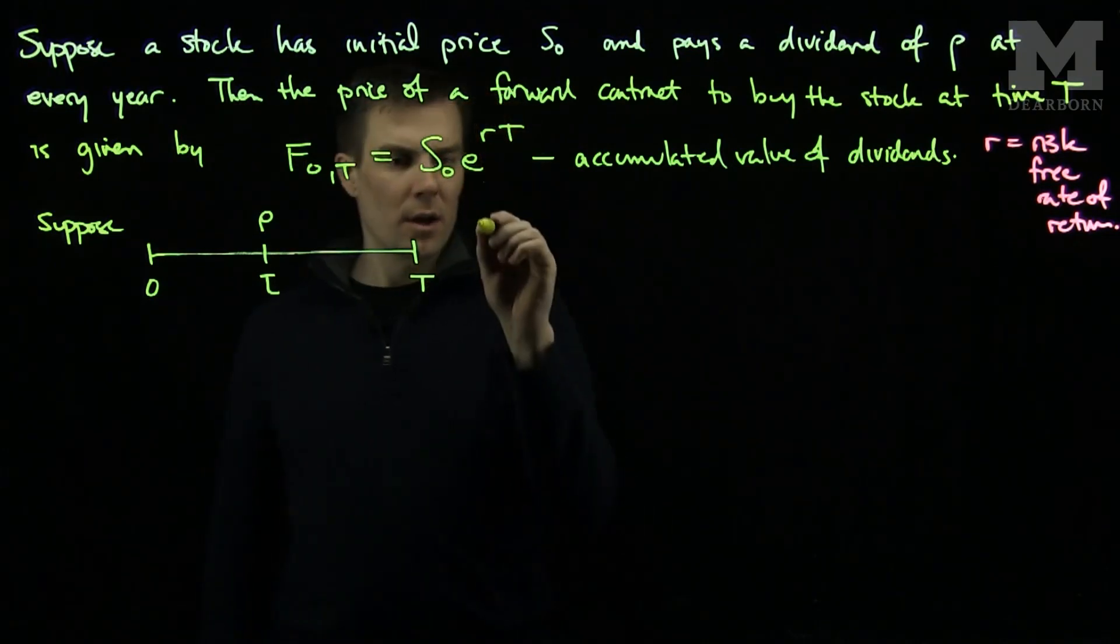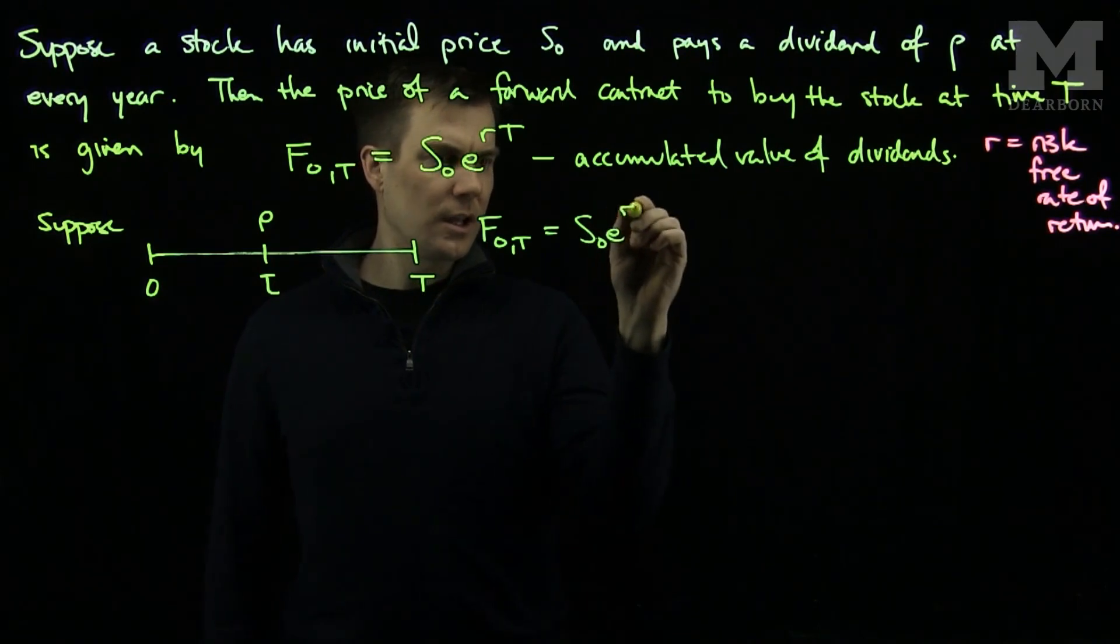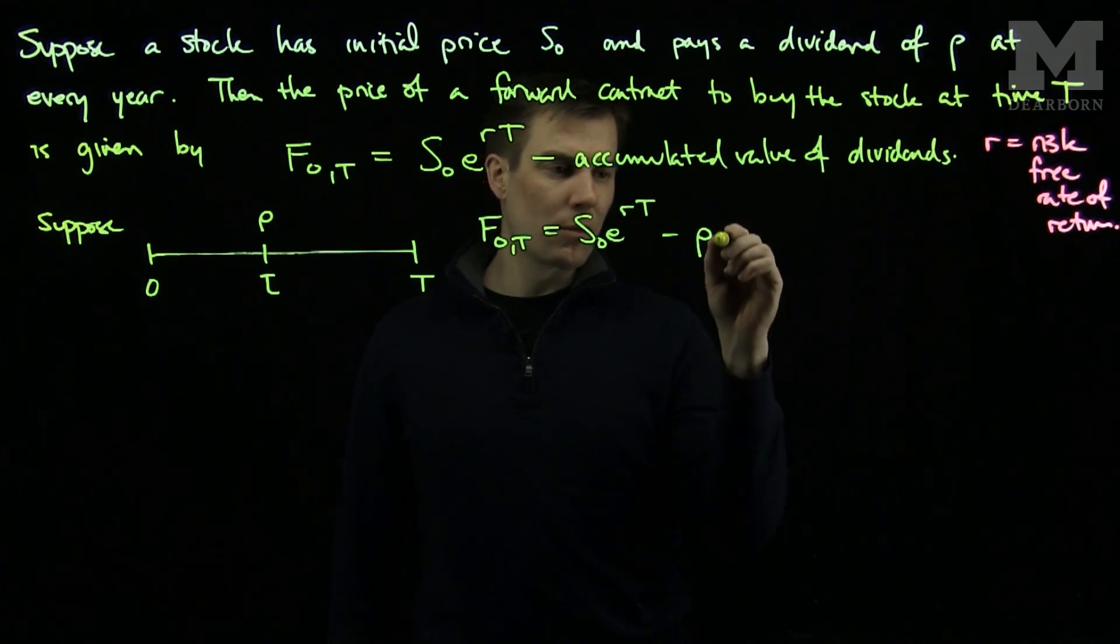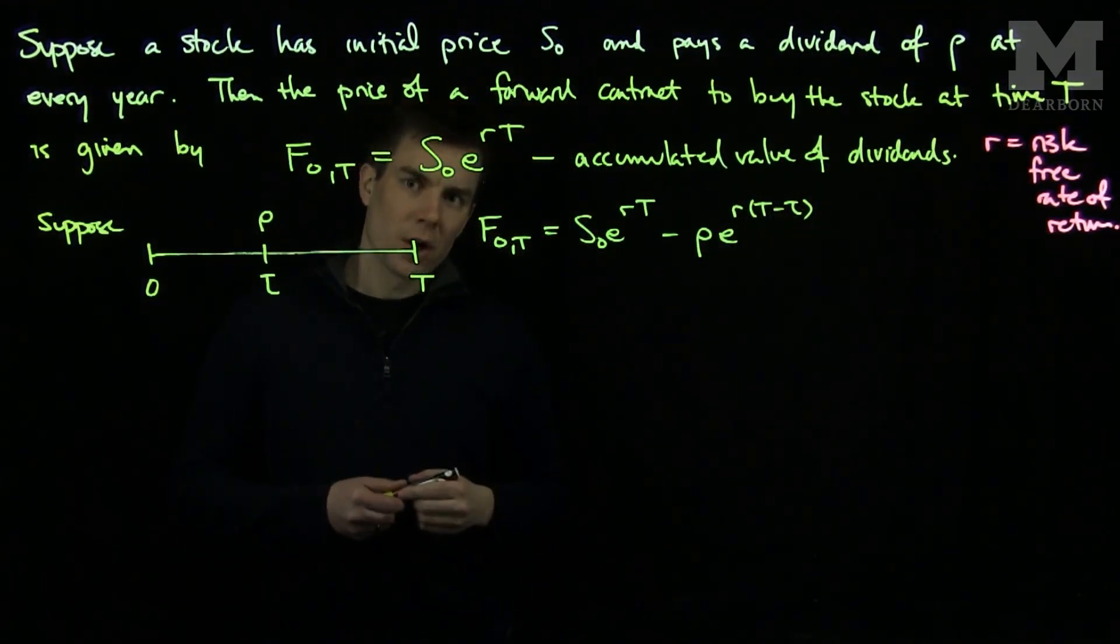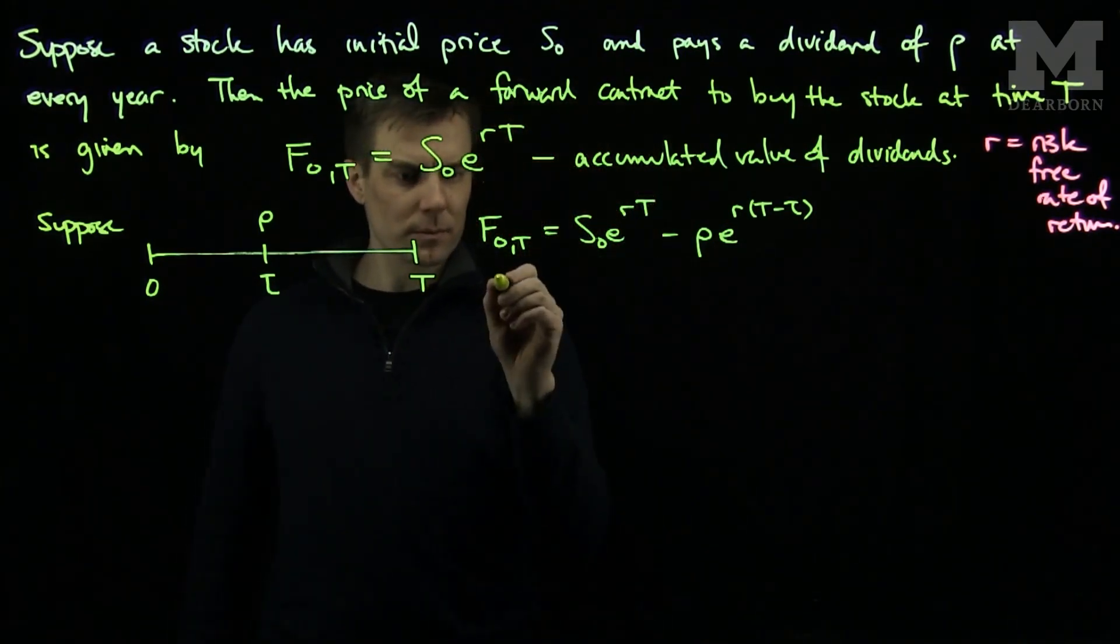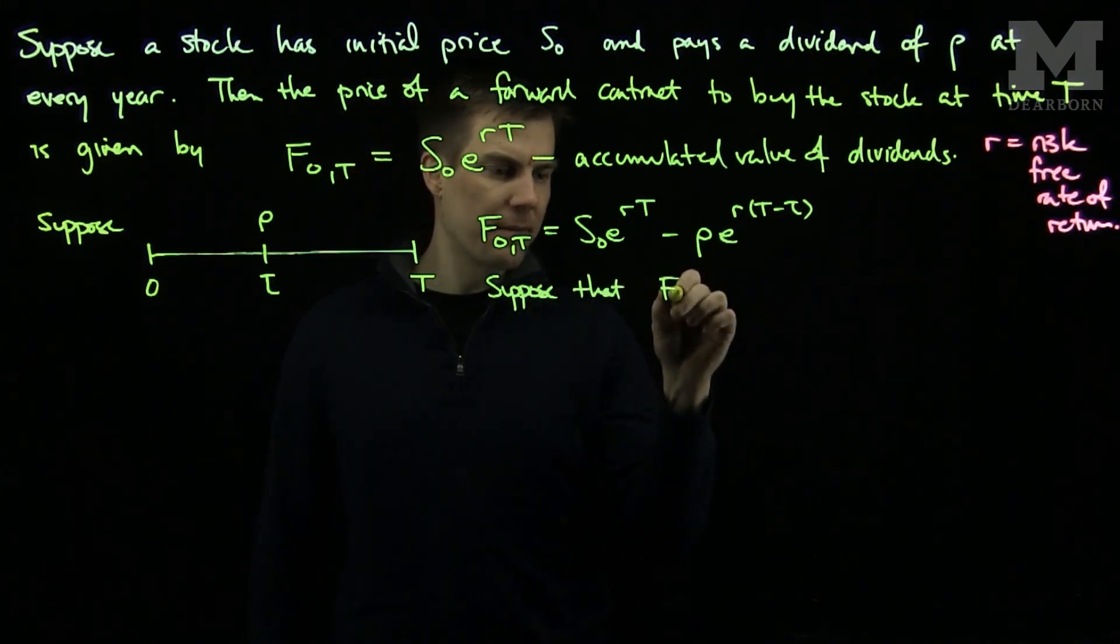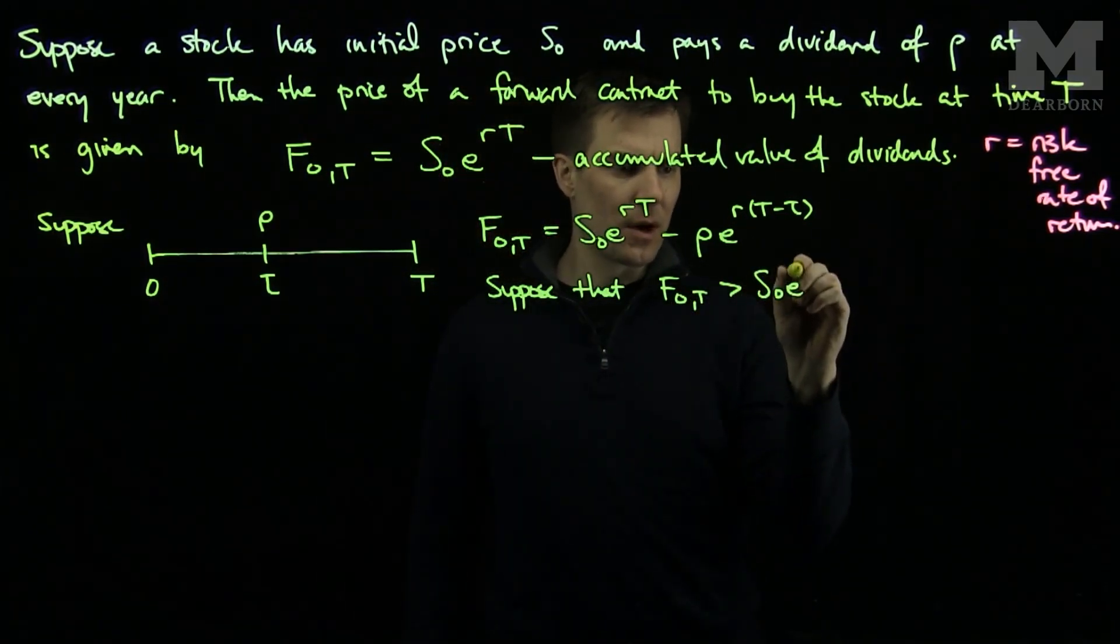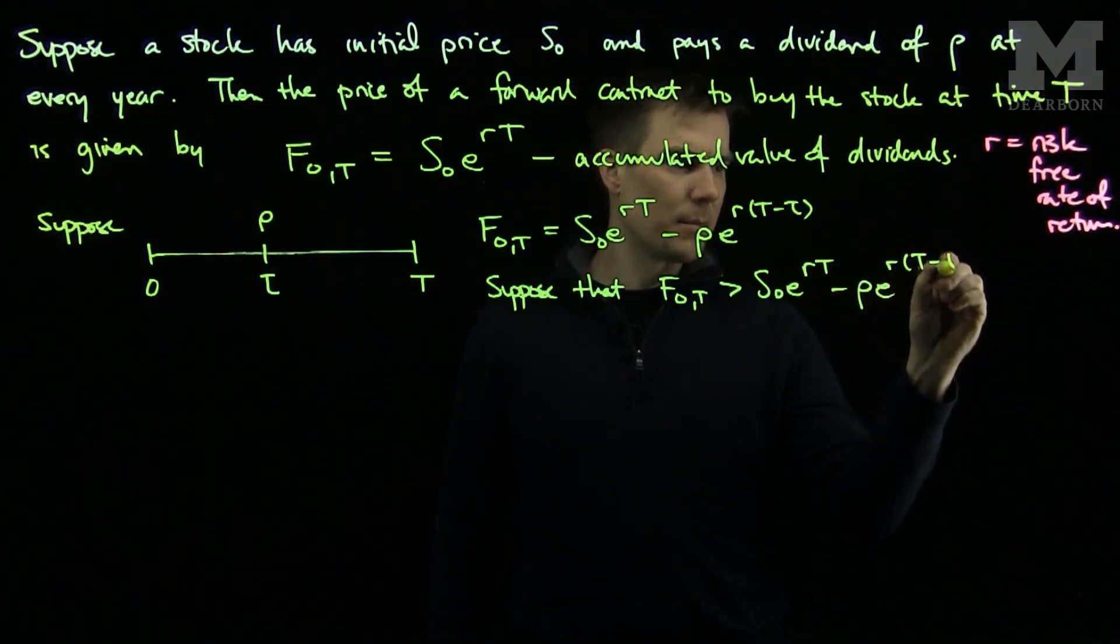According to our formula, the future forward price will be S0 e to the rT minus the accumulated value of the dividends, which will be rho e to the r(T-tau). So, let's suppose that F0T is strictly bigger than S0 e to the rT minus rho e to the r(T-tau).